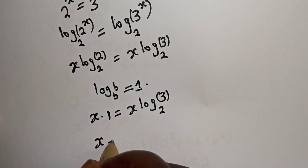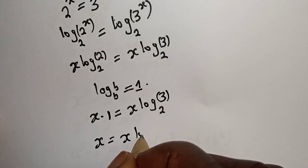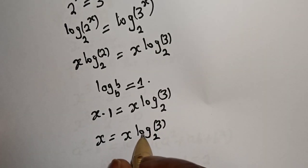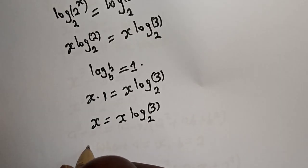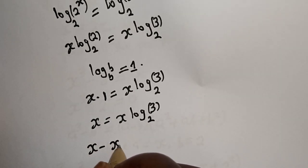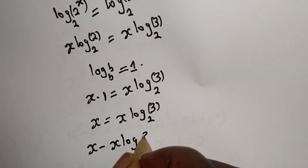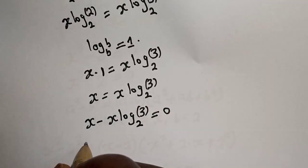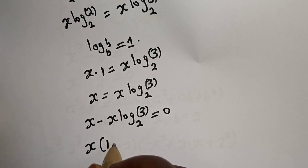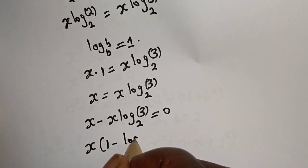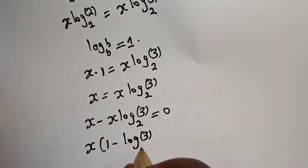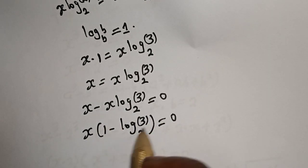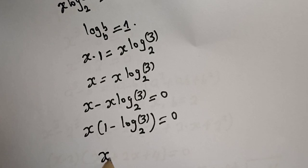Then s is equal to s log 3 base 2. Let's bring this to this side: s minus s log 3 base 2 is equal to 0. Then s is common: s bracket 1 minus log 3 base 2 is equal to 0.